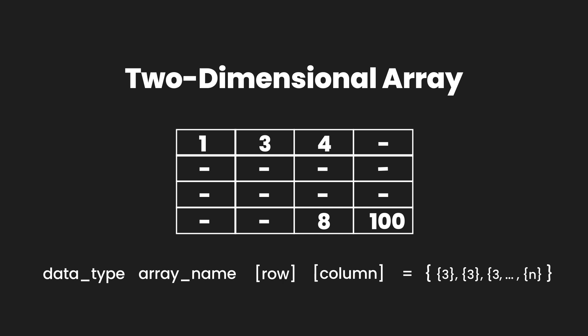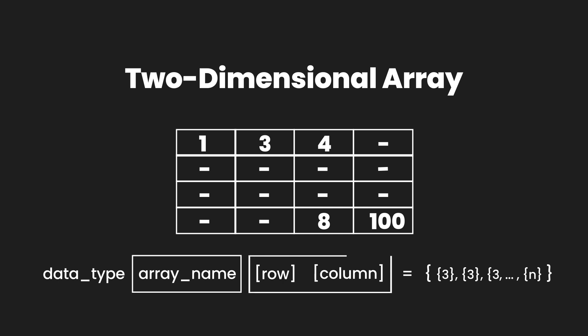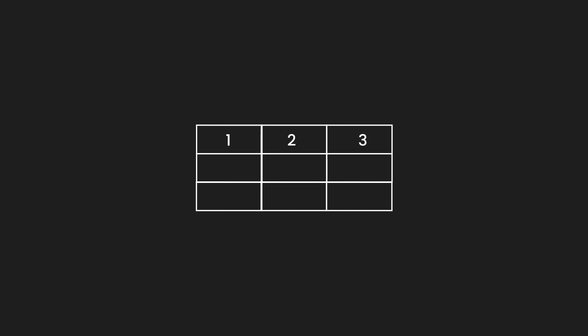Similar to one dimensional arrays, we still have to access elements from within the array. To access an element from a normal array we use the array name followed by the square bracket containing the index of the value we want to access. To get a value from a two dimensional array, let's put up a new 2D array containing three rows and three columns, filled with integer values one through nine. Since indexes start from zero, the index values for rows are zero, one, two, and for columns are zero, one, two as well.